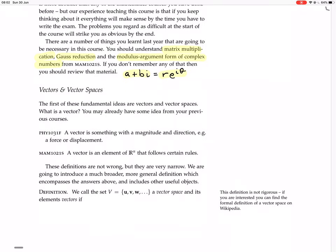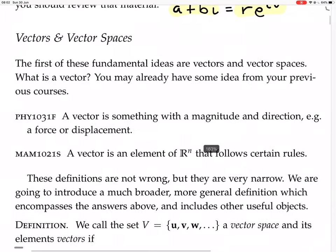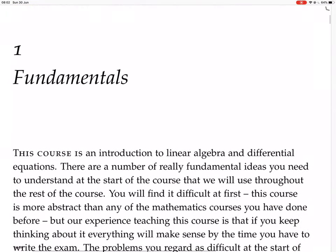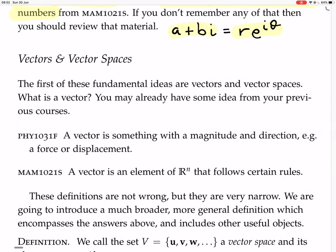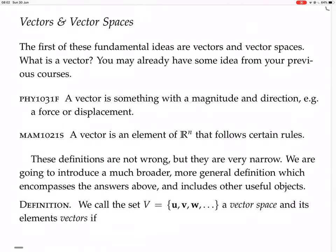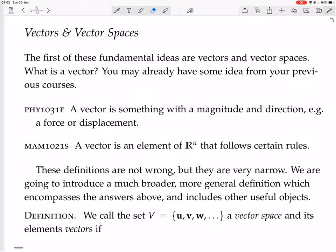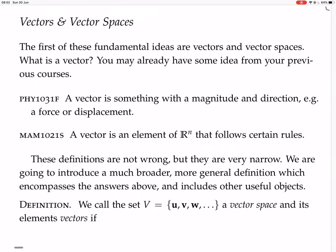So now we have vectors and vector spaces. The first of these fundamental ideas in this chapter that we have to learn from the beginning of this course are vectors and vector spaces. What is a vector? You may already have some idea from your previous courses. In physics, maybe a vector is something with a magnitude and direction, e.g. a force or a displacement. Or maybe a vector is an element of Rⁿ that follows certain rules. These definitions are not wrong, but they are very narrow. We are going to introduce a much broader, more general definition, which encompasses the answers above and includes other useful objects.